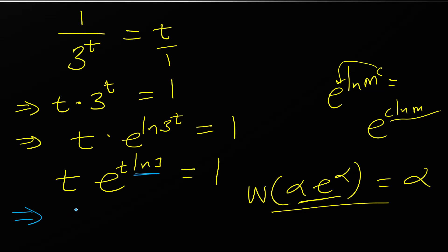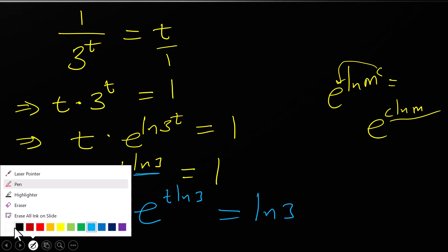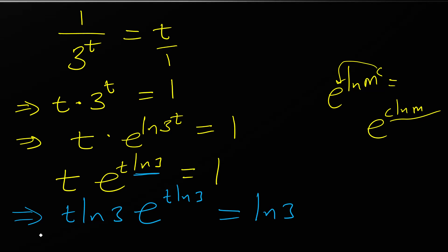If I multiply this side by ln of 3, it will be t ln of 3 times e raised to t ln of 3 equals ln of 3. Now check the left hand side: t ln of 3, t ln of 3. So we are free to go. Let's take the W function of that.